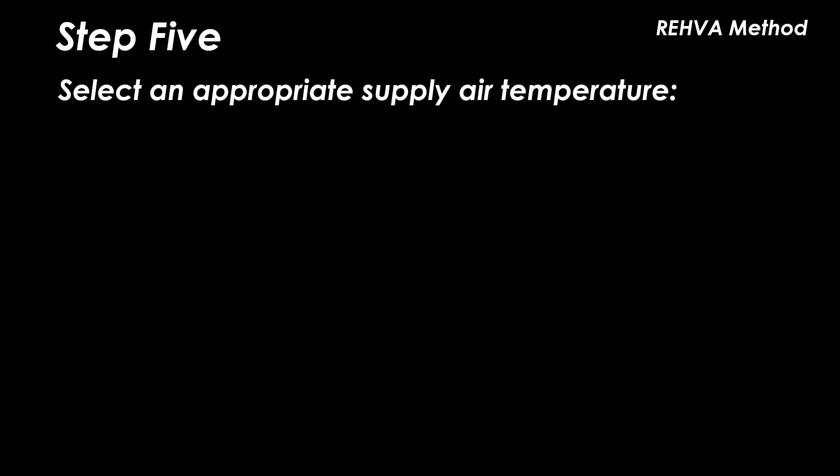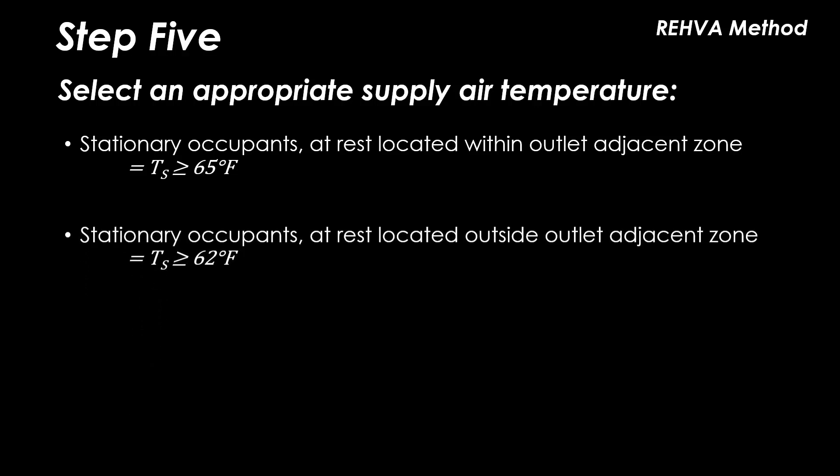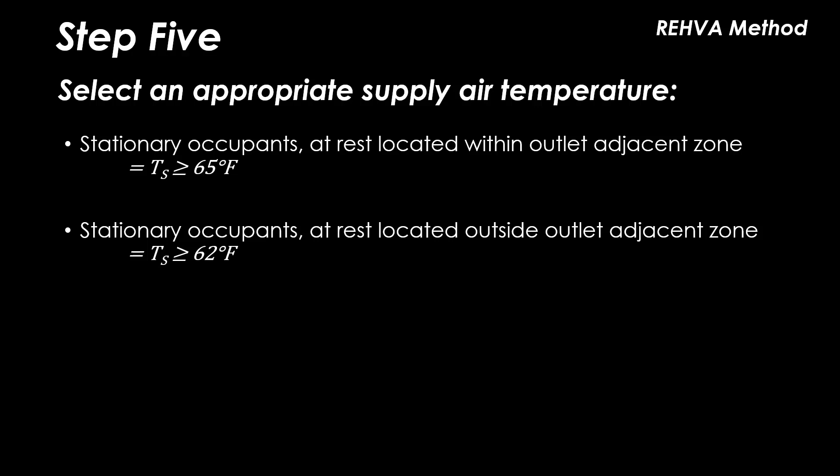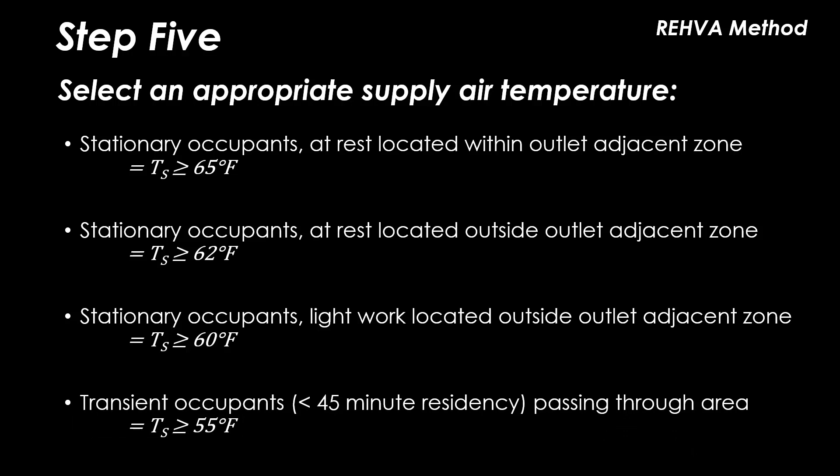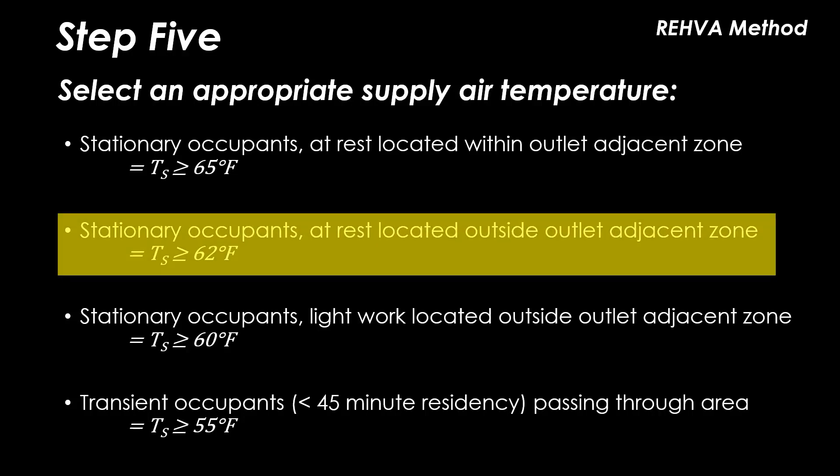In step five an appropriate supply air temperature TS is selected for the application for one of these four following scenarios. Stationary occupants at rest located within the supply outlet adjacent zone, TS should be equal to or greater than 65°F. Stationary occupants at rest located outside the supply outlet adjacent zone, TS should be equal to or greater than 62°F. Stationary occupants light work located outside the supply outlet adjacent zone, TS should be equal to or greater than 60°F. And for transient occupants passing through the area, TS can be equal to or greater than 55°F. A TS of 62°F has been chosen for our classroom example.